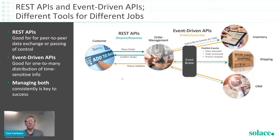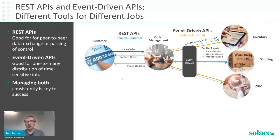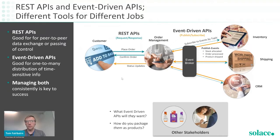Where do we use each? REST APIs are good for peer-to-peer data exchange and passing control — when I place an order, I'm handing control to the order management system. Event-driven APIs are better for one-to-many data distribution: the application emits events without knowing who's listening. Event-driven is also best for time-sensitive information — in e-commerce, getting the customer's order placed quickly matters. What about external stakeholders like a shipping fulfillment partner such as DHL or FedEx?